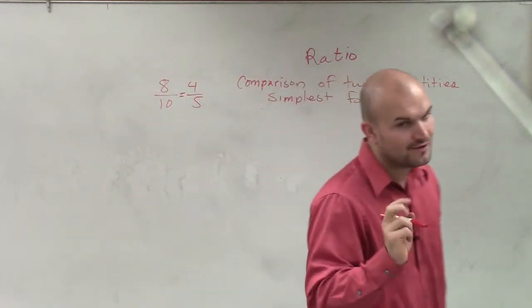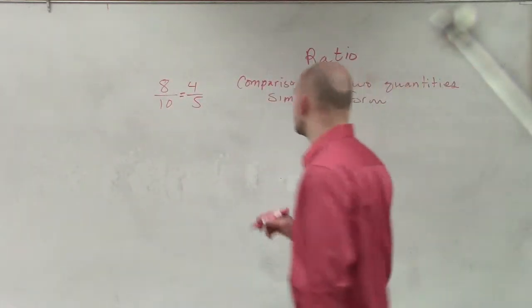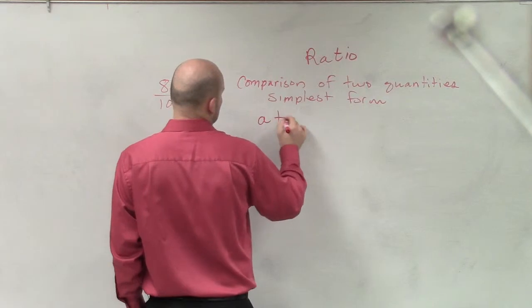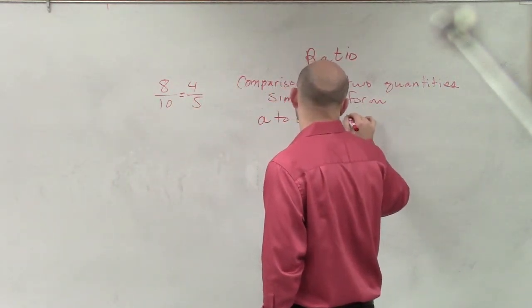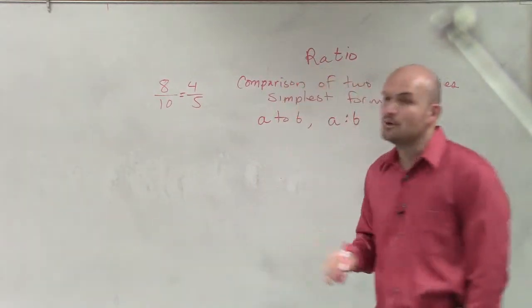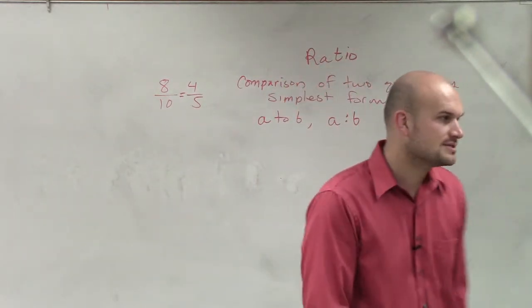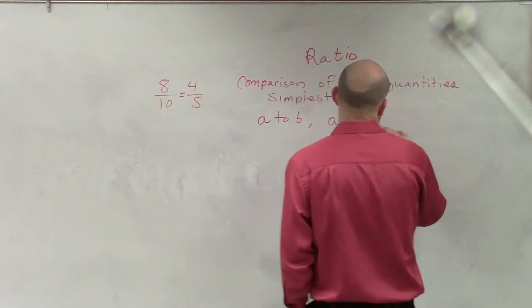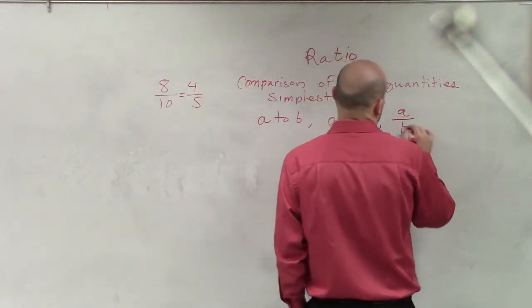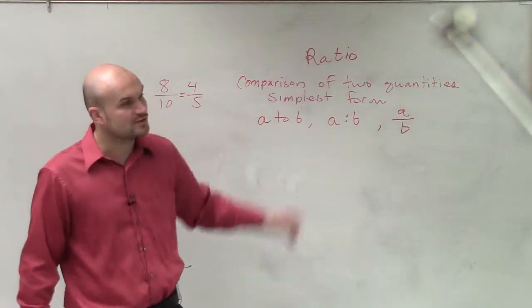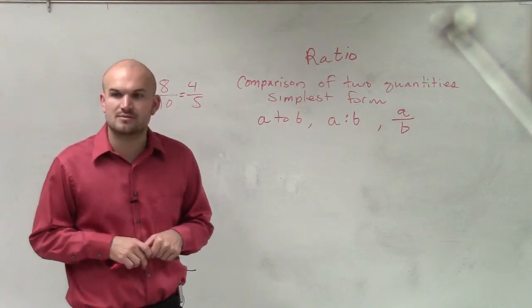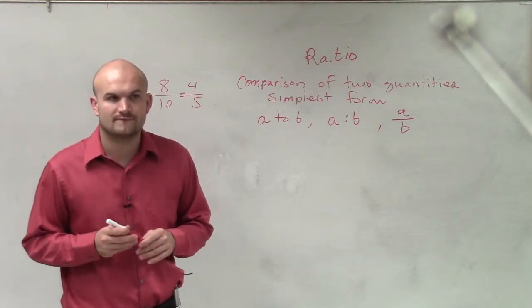Now there's a lot of different ways that we're going to represent ratios. We can say A to B, A colon B. And the most common way that we're going to use it is using a division as far as A over B. And that's mostly what we're going to be doing in this class. However, we will do a little bit of that, and you probably might see some of others. That's a ratio.